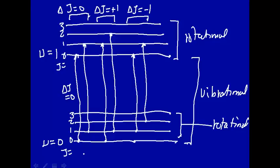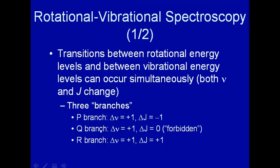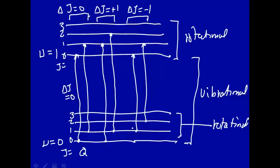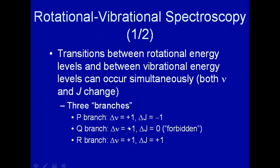These are called branches. This is called the Q branch, where the j does not change. The R branch, where—sorry, the P branch, where j changes by minus one. So we say that's a P branch. And the R branch is where j changes by plus one.